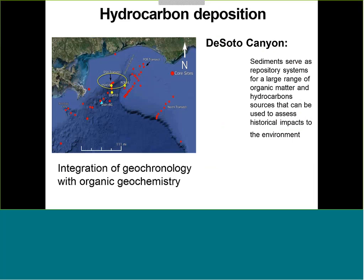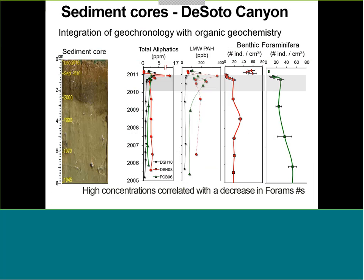Moving on to the sediment environment — you have seen this map before. We focused our initial studies on the DeSoto Canyon, as Dave and Greg Brooks discussed, integrating geochronology with organic geochemistry to understand where oil sank in that region of the Gulf. In the sediment core, we analyzed chemicals at each layer and found that total aliphatics and low molecular weight PAHs were elevated during 2010 and 2011 relative to background. Correspondingly, benthic organism densities decreased during that period — some sites recovered afterward, while others still show no recovery.